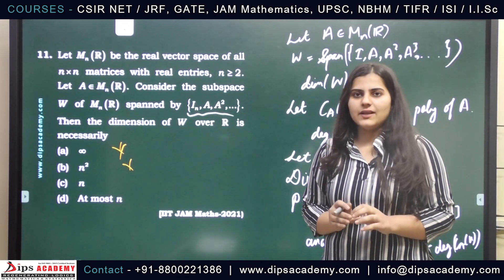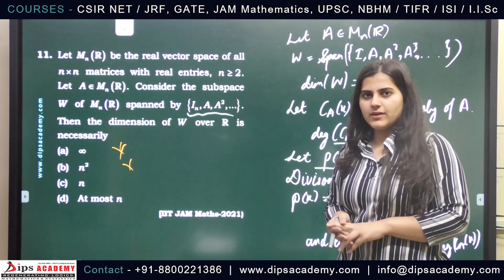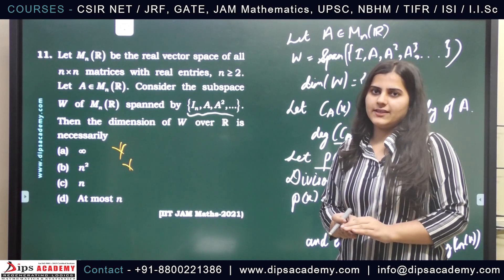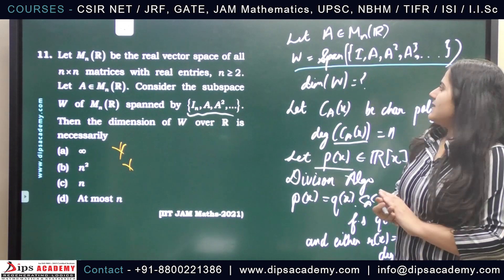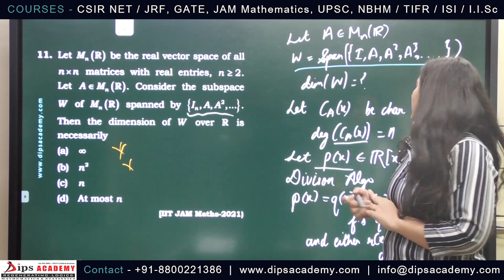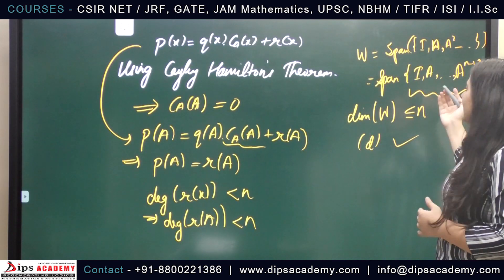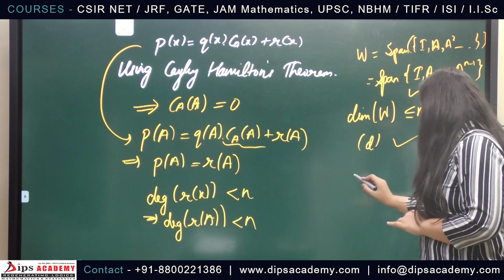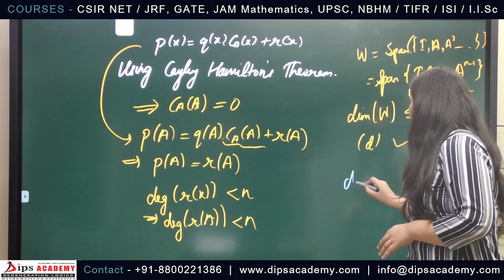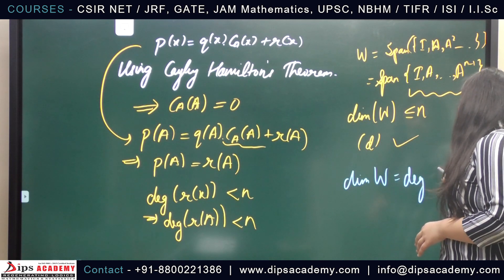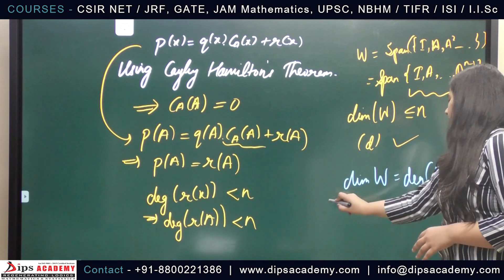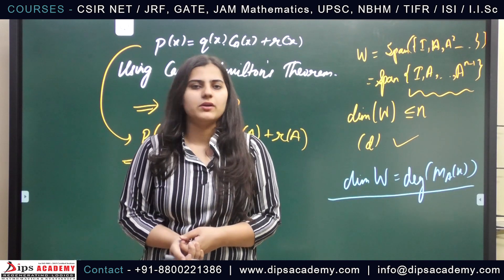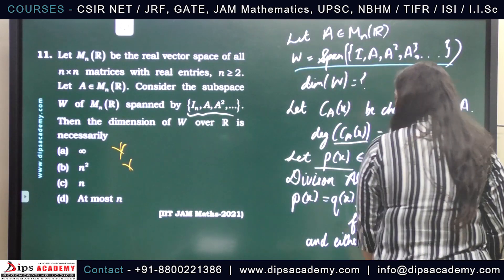We have used only two key facts: that we can apply the division algorithm to any two polynomials, and that every matrix satisfies its characteristic polynomial. Using these, we showed W equals the space spanned by {I, A, ..., A^(n-1)}, and the dimension of W for any arbitrary matrix is equal to the degree of the minimal polynomial of that matrix. This can equal the degree of the characteristic polynomial or be less than it. Therefore, option D is the correct answer.